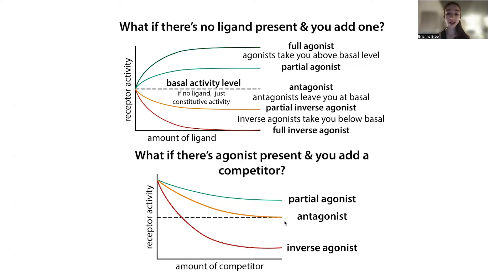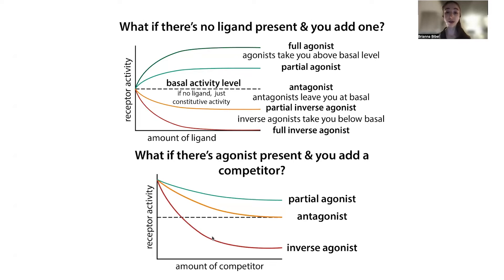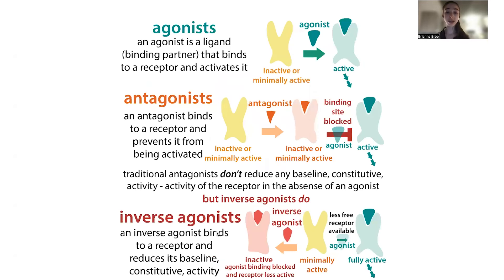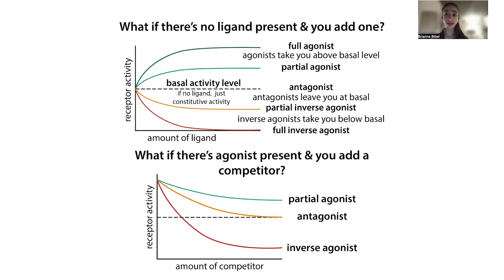An inverse agonist can still go below baseline even in competition. The amount of activity reduction depends not just on the type of ligand but also on how much of it you have. Since these are all competing for the same binding site, if you add enough agonist, you can overcome the effects of the others — assuming they're all acting as competitive binders at the active site.